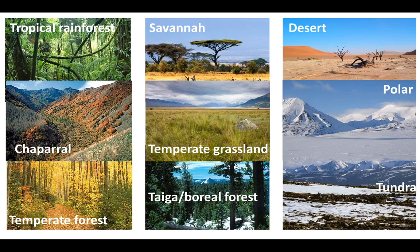As we just saw, there are a variety of biomes, and they have some similarities and some differences. Some are very densely packed with biotic features — plants and animals — such as the tropical rainforest. Compare that to the polar biomes and desert biomes, which are very sparsely populated with living things.